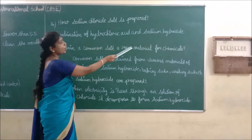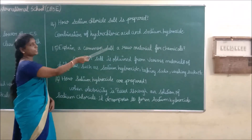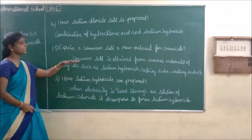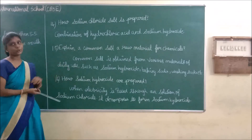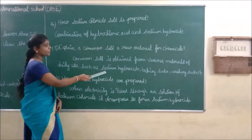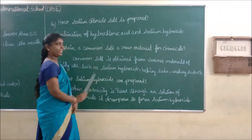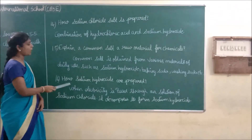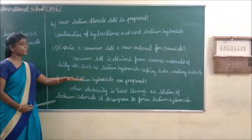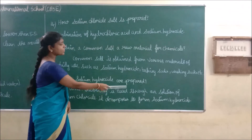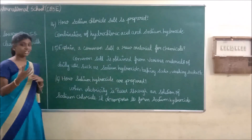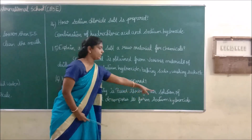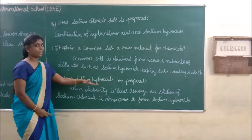Explain common salt as a raw material for chemicals. Common salt is obtained from various materials of daily use such as sodium hydroxide, baking soda, washing soda, etc. How is sodium hydroxide prepared? When electricity is passed through a solution of sodium chloride, it decomposes and forms sodium hydroxide.